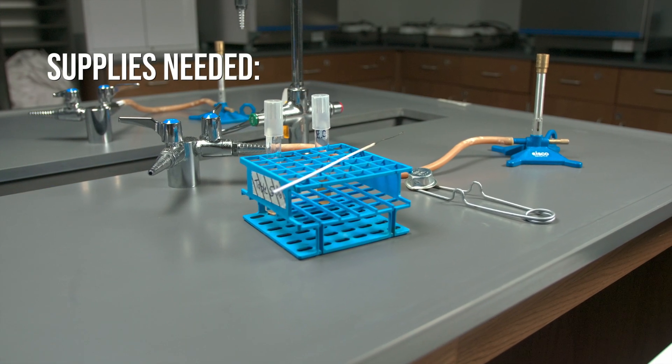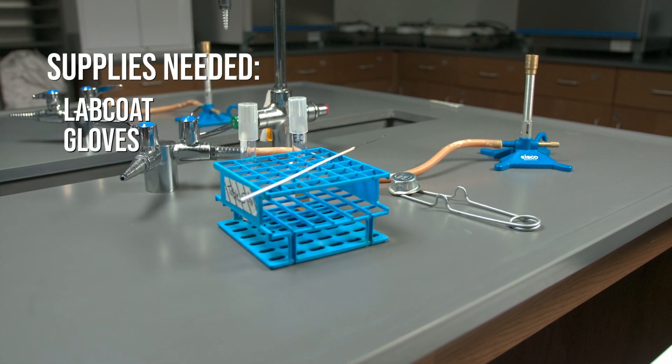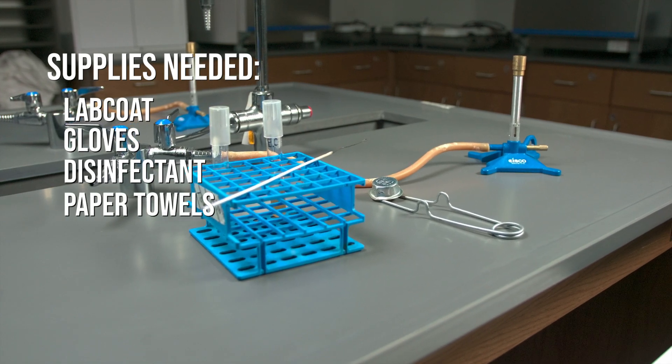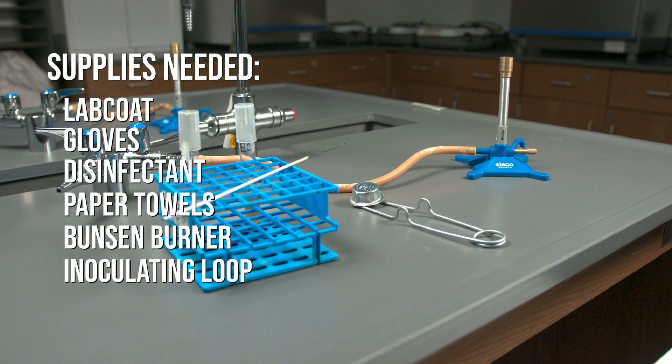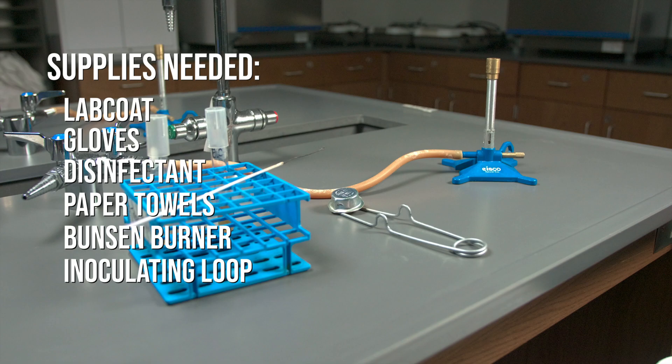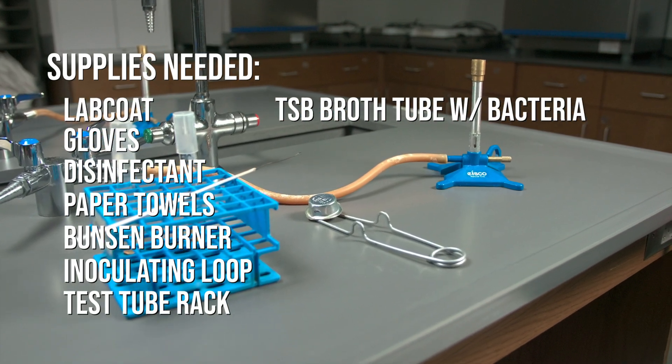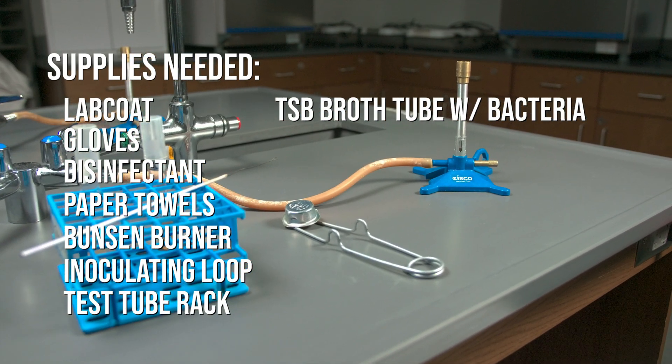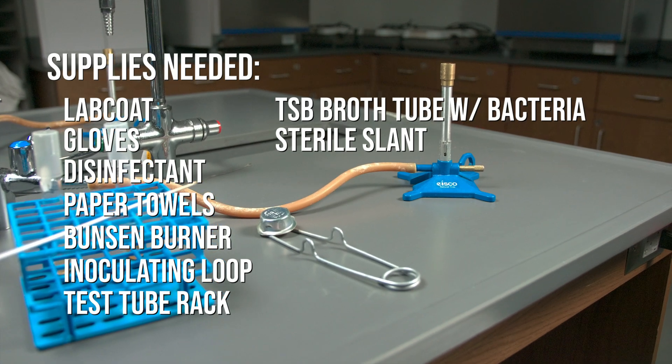The supplies you will need are a lab coat, gloves, disinfectant, paper towels, a Bunsen burner, an inoculating loop, a test tube rack, TSB broth tube with bacteria, and a sterile slant.